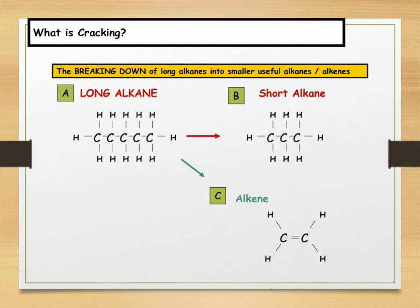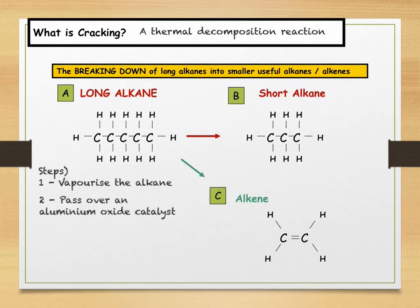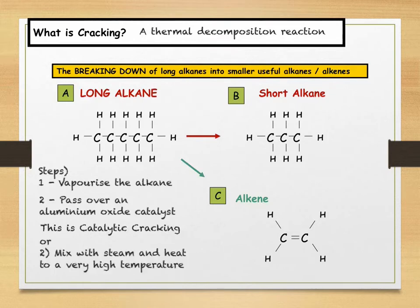We will look at alkenes later on in this video. There are different methods of carrying out cracking — it is a thermal decomposition reaction, meaning we are breaking molecules down by heating them. The first step is to heat long chain hydrocarbons to vaporise them. The vapour is then passed over a hot powdered aluminium oxide catalyst, causing the molecules to split apart — this is known as catalytic cracking. We can also crack hydrocarbons by mixing them with steam after vaporising them and heating to exceptionally high temperatures — this is known as steam cracking. Regardless of the method, you are taking a long chain alkane and converting it into a shorter chain alkane and a small alkene.